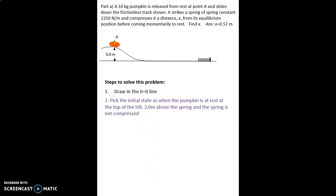First step would be to draw in the h equals zero line. That's our gravitational potential energy reference height. Next thing is we'll pick the initial state and we're going to pick the initial state is when the pumpkin is at the top of the hill.